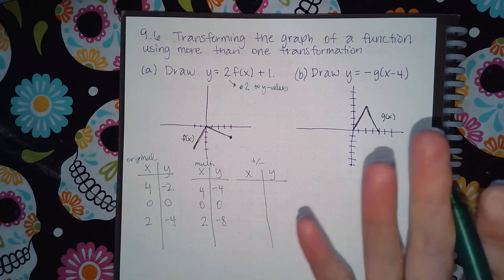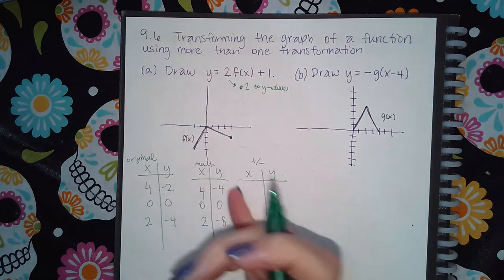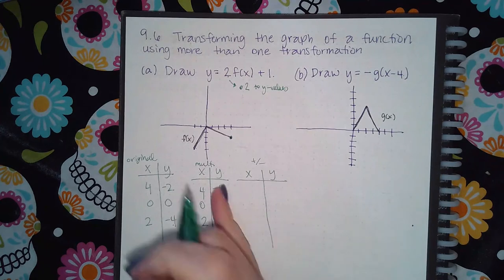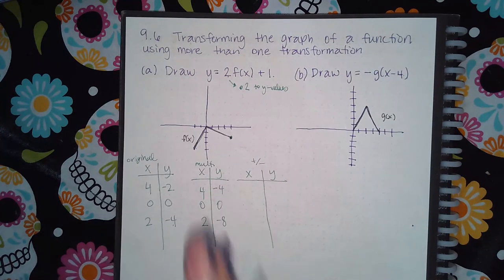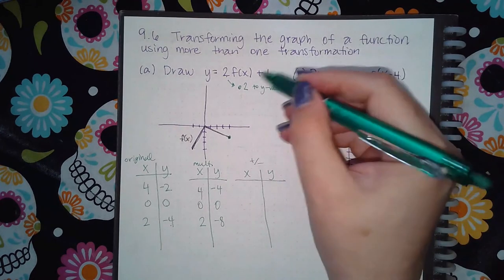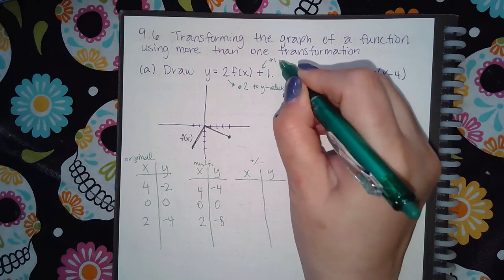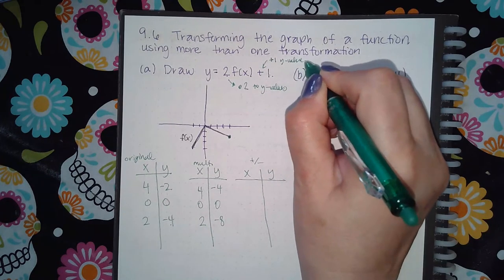The multiplication is either going to happen on the outside or the inside. So you're only going to need to be doing something to one of these columns. And the other column will stay exactly the same. Then the last thing I need to do is, because of this plus one outside, it means I'm going to actually add one to the y values because it's outside.